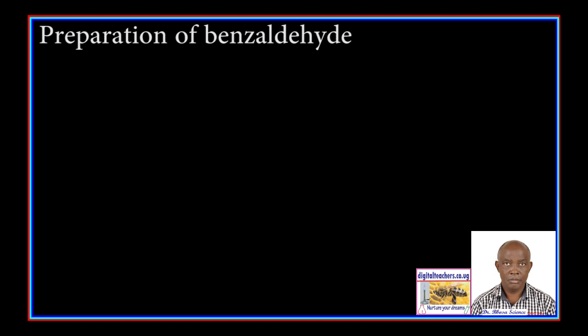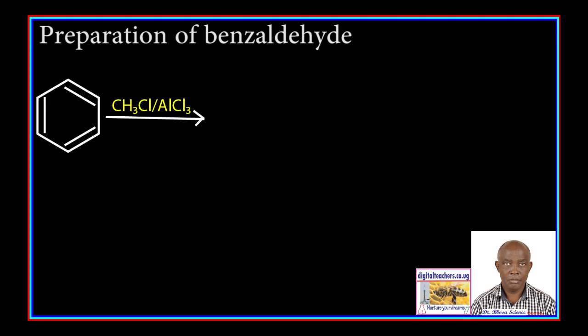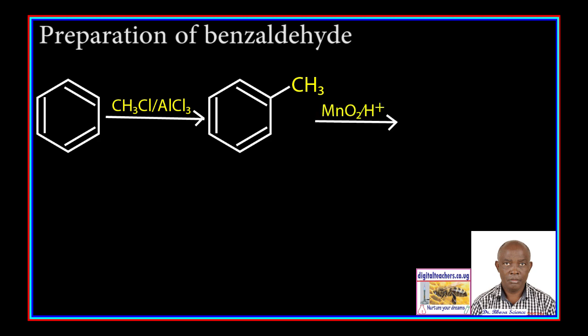Preparation of benzaldehyde: Benzene is reacted with methyl chloride in the presence of aluminum chloride to form methylbenzene. Methylbenzene is oxidized with a mild oxidizing agent, manganese dioxide, in the presence of an acid to form benzaldehyde.